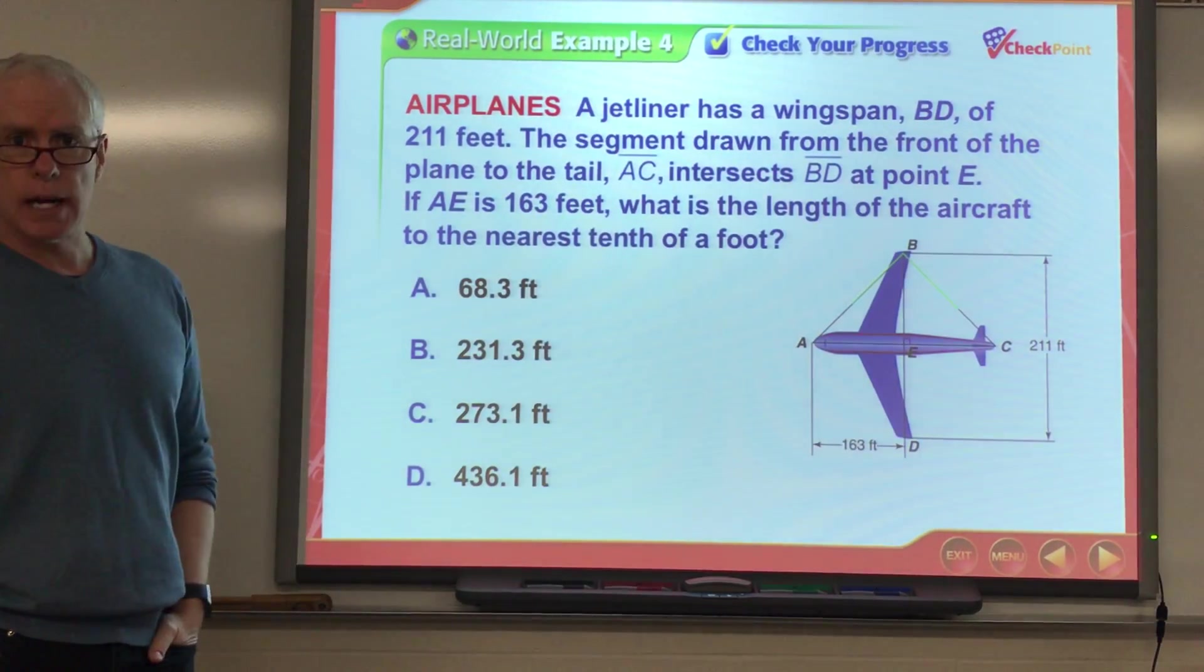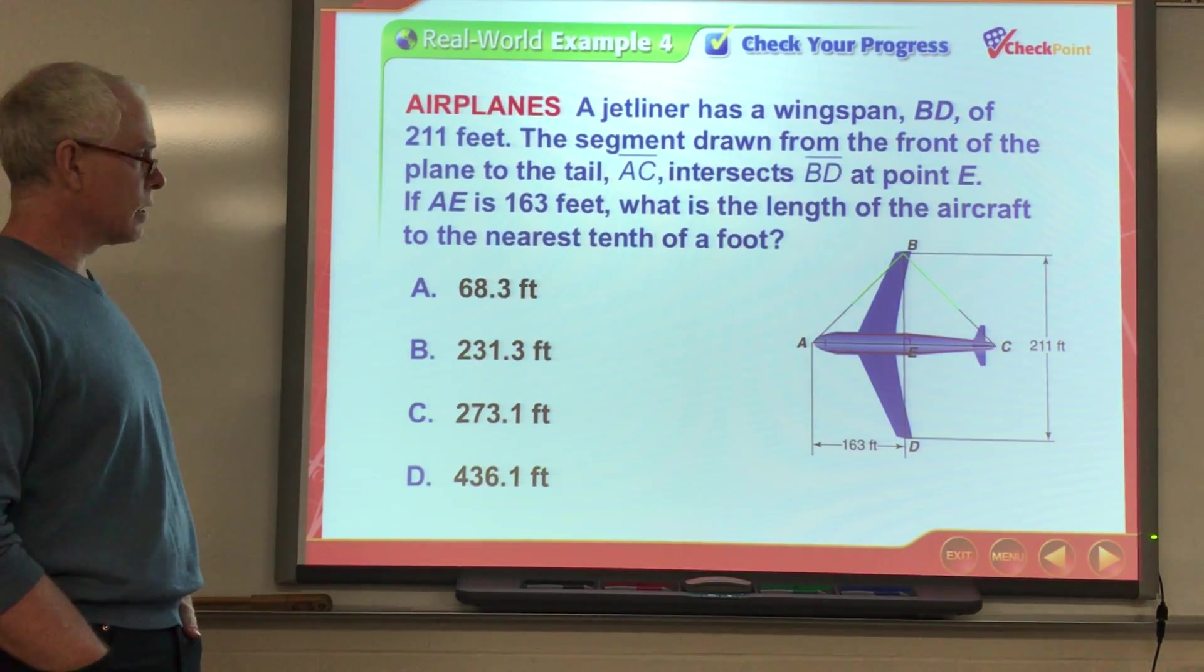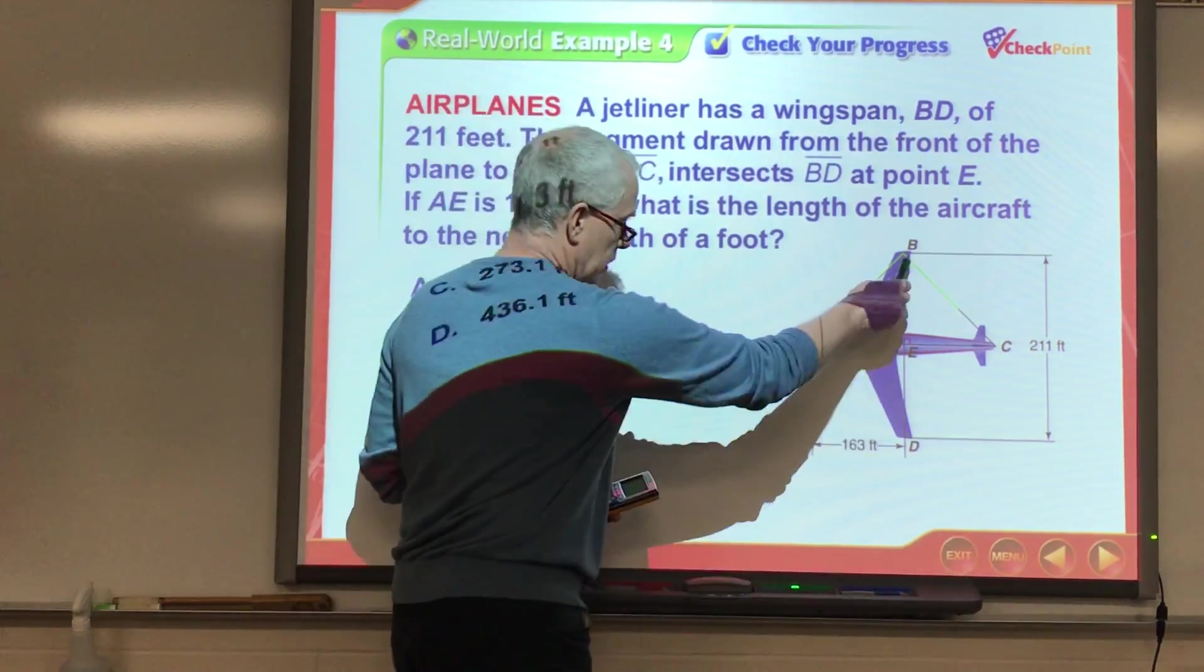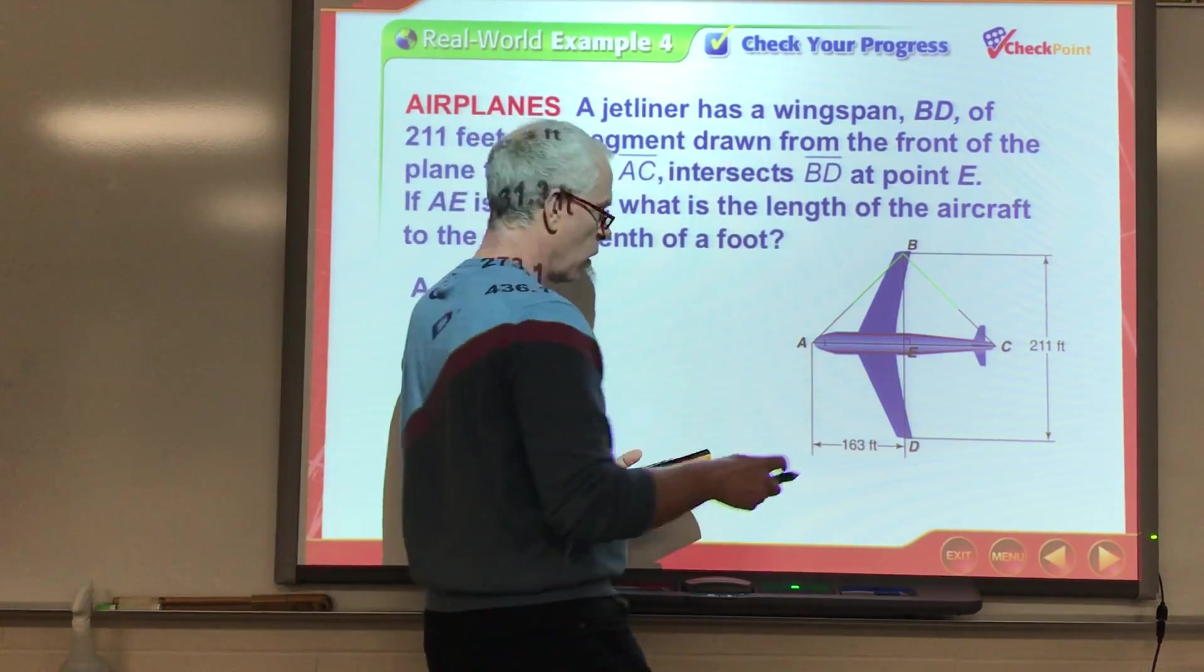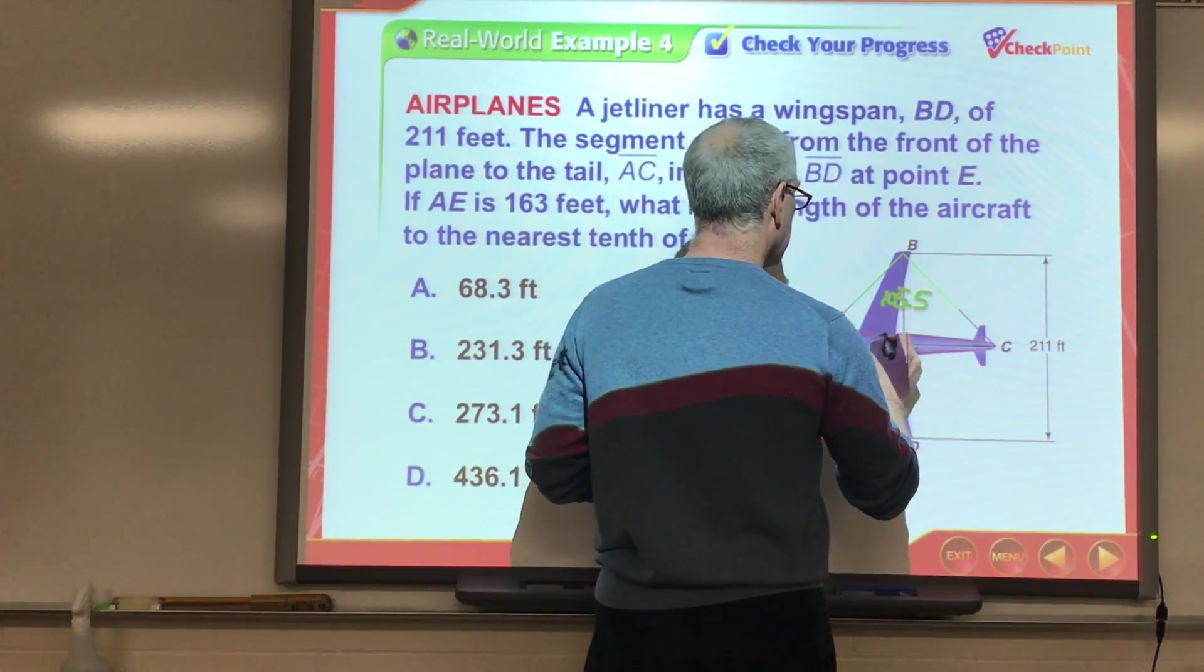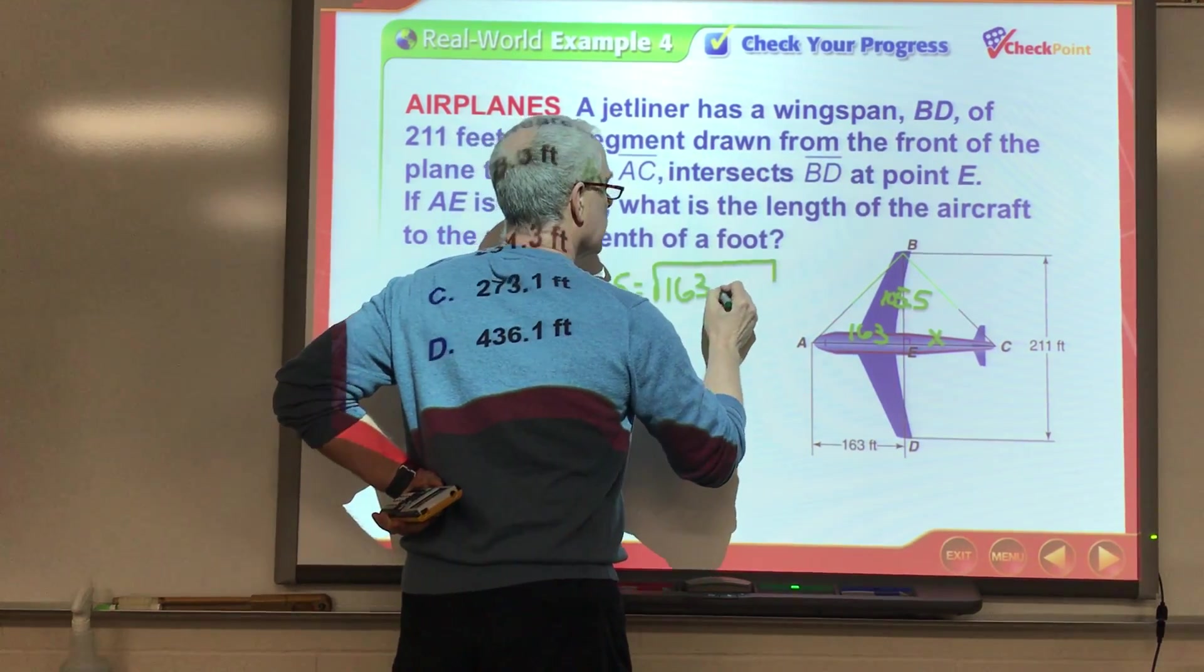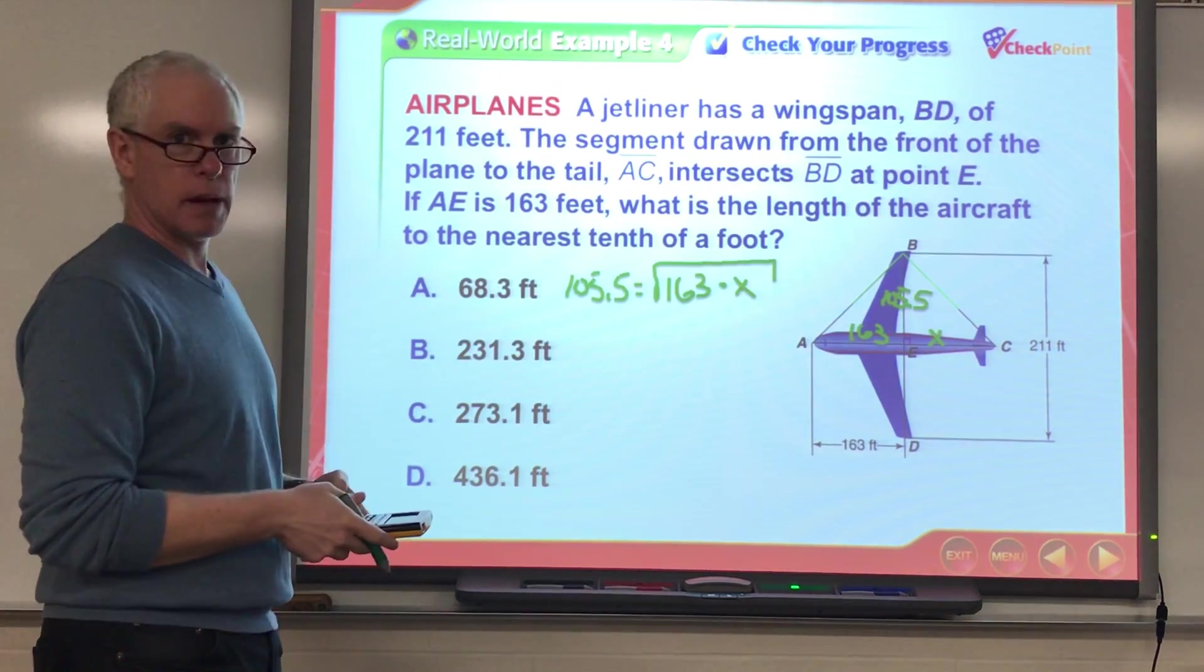So, pause the video. Give this one a shot. All right, you guys. I've got a similar statement. And in the end, they're asking me to find the length of the aircraft. So, all the way from A to C. Well, as I work through this, 211 is the length of that entire segment. So, if I divide that by 2, I get 105.5. This was 163. And we'll call that X. So, 105.5 equals the square root of 163 times X. Okay.